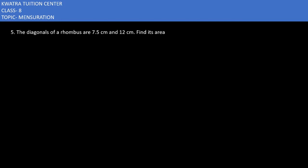Let's start with question number 5. It says the diagonals of a rhombus are 7.5 cm and 12 cm. Find its area. So what we have now is a given rhombus and its diagonals, and we have to find out the area. So what do you have to do?